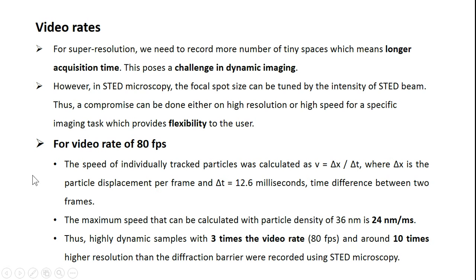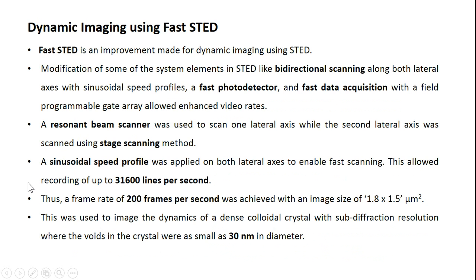A latest application involves dynamic imaging using faster scanning with bidirectional scan, a fast photodetector, and fast data acquisition with FPGA. Using STED scanning with a sinusoidal speed profile, you can achieve 31,600 lines per second, giving a frame rate of 200 frames per second. As discussed, this is application dependent — here the diameter is 30 nanometers to image dynamics of a dense colloidal crystal. Increasing the focal spot size further increases video speed.